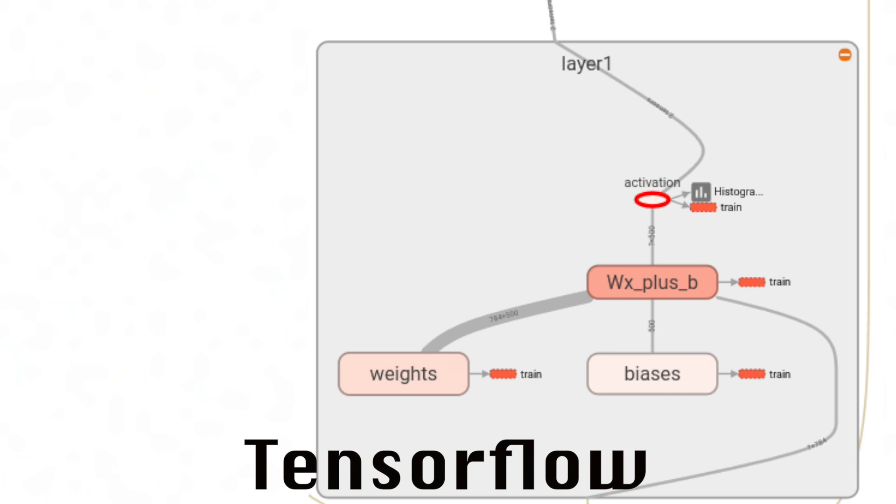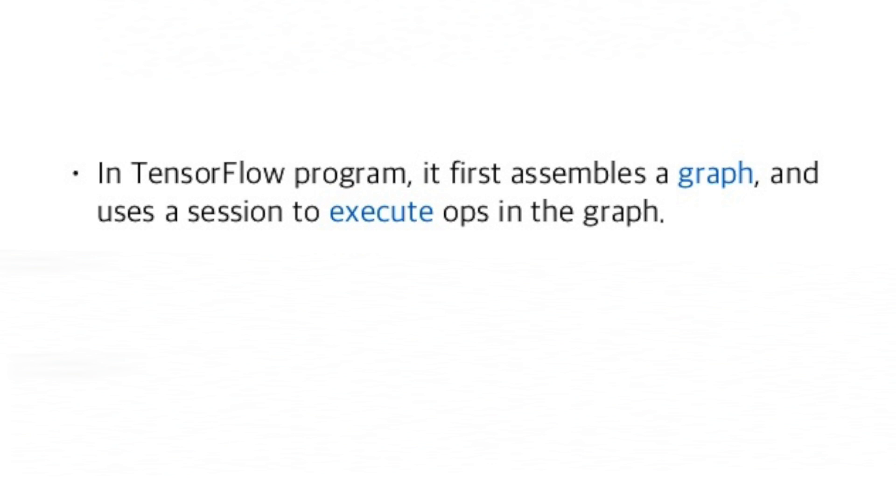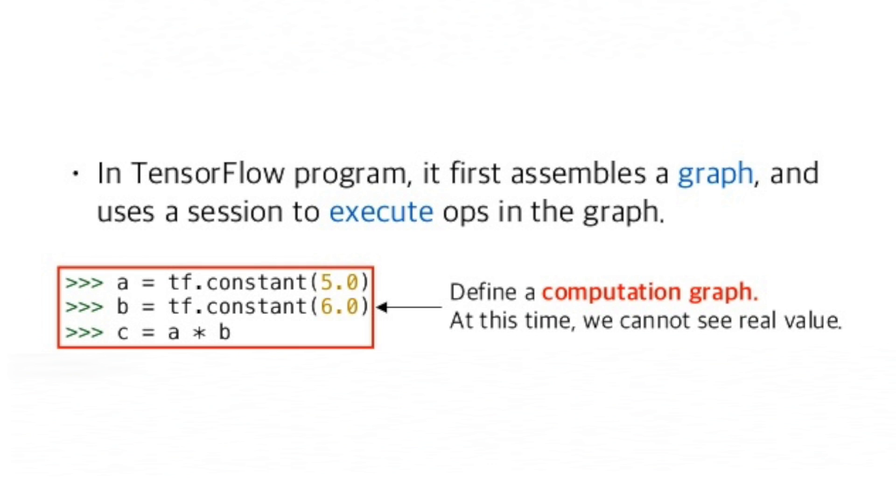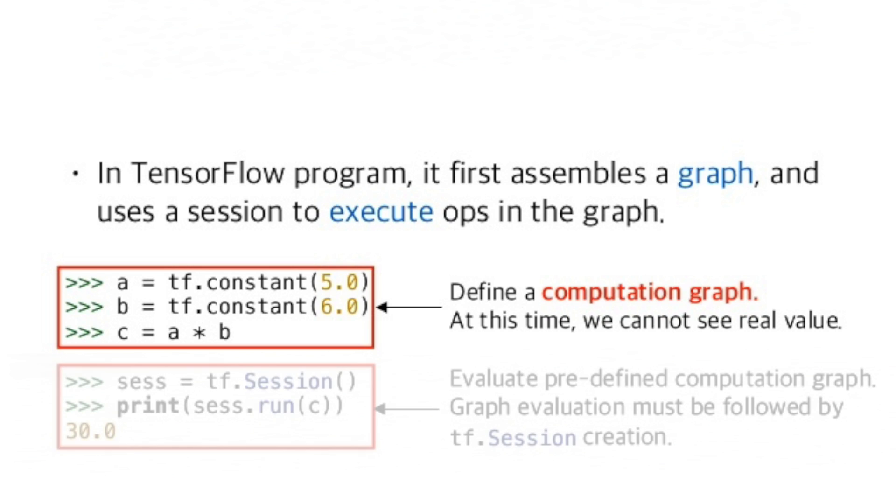TensorFlow is define and run, where we define conditions and iterations in the graph structure. It's like writing the whole program before running it, so the degree of freedom is limited. So in TensorFlow we define the computation graph once, then we can execute that same graph many times. The great thing about this is that we can optimize the graph at the start.